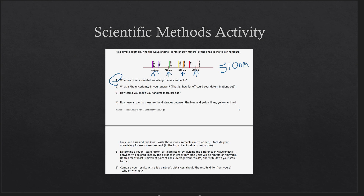The second question involves asking about uncertainty — how certain are you about your answers? Determine how far off you can be. For example, if you think green is 510 nanometers but someone else says 515 and you can't argue against that, your error would be about 5 nanometers, meaning it could range between 505 and 515. You only need one error estimate for all the lines — on average, are you off by 5, 3, 10, or 100 nanometers?